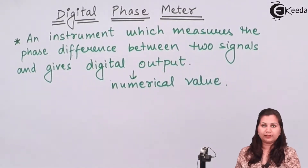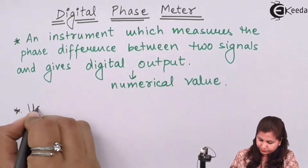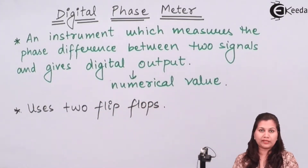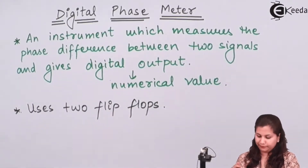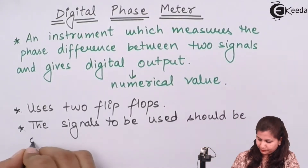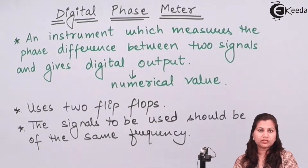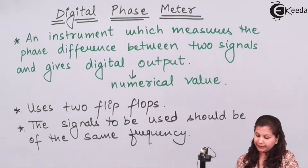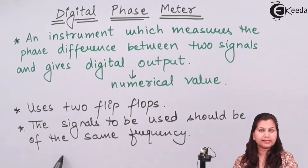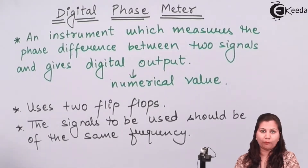The simplest technique to measure the phase difference between two signals uses two flip-flops. Also, the frequency of the two signals whose phase difference we want to measure must be the same. The technique we are going to study here uses two flip-flops, and the two input signals whose phase difference we want to measure must have the same frequency.